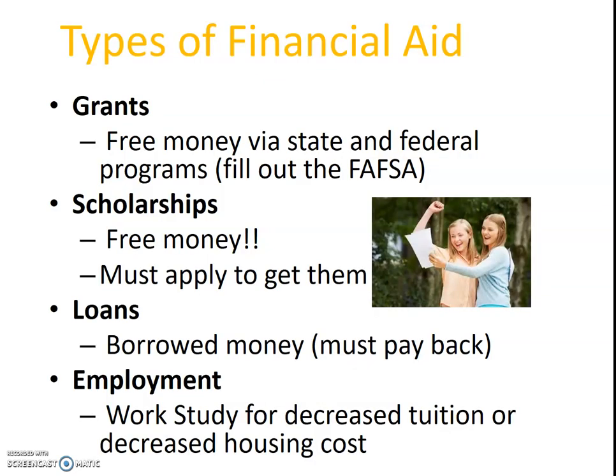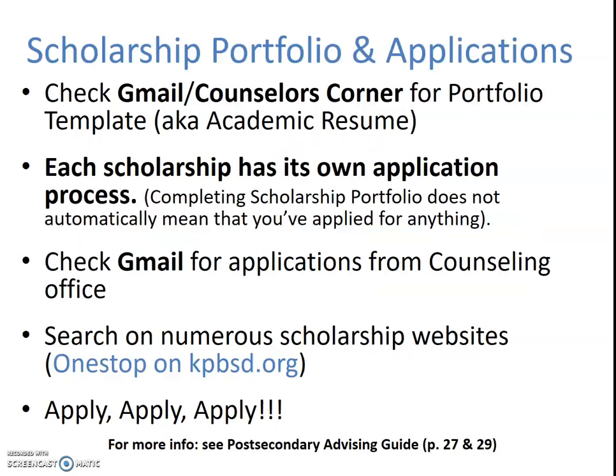Different types of financial aid: Grants are free money via state and federal programs — fill out the FAFSA first to see what you're eligible to receive. Scholarships are also free money you don't have to pay back, but you must apply to get them. Loans are borrowed money you must pay back. Also don't forget work study at your college to see if you can get decreased tuition or housing costs.